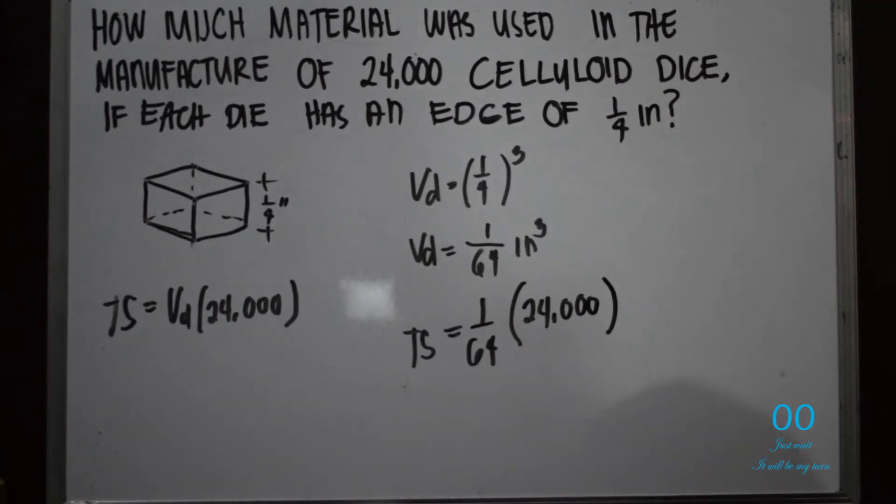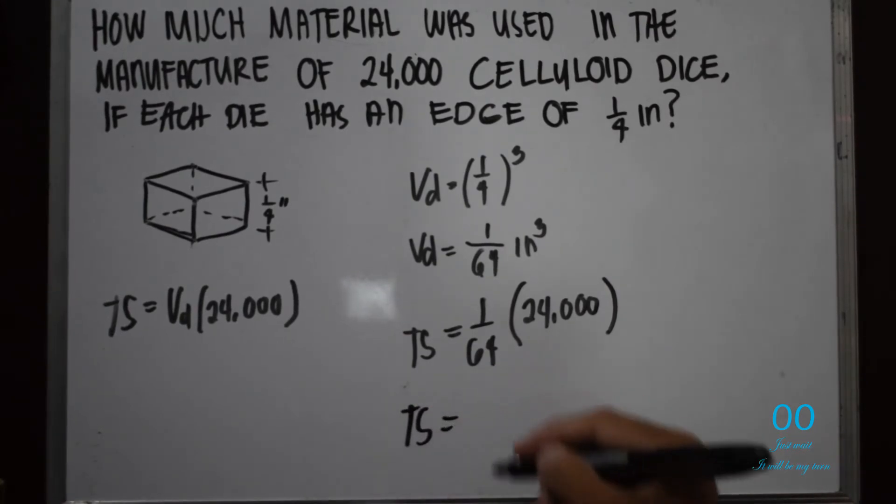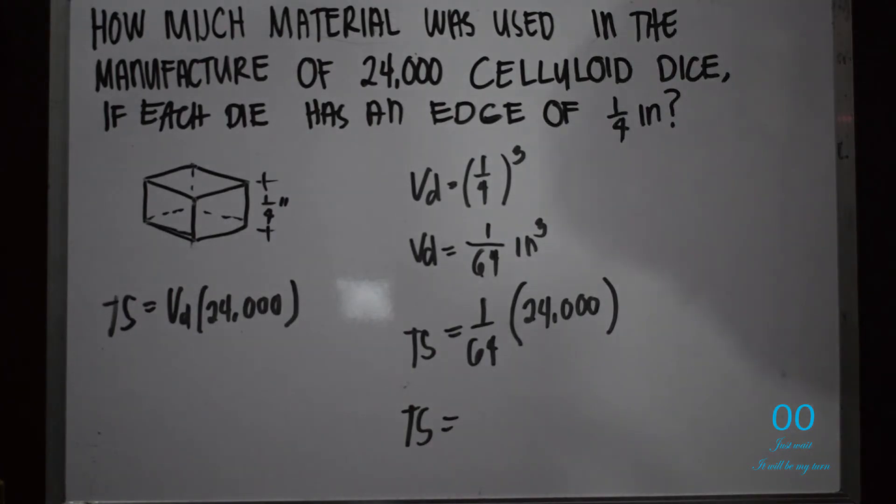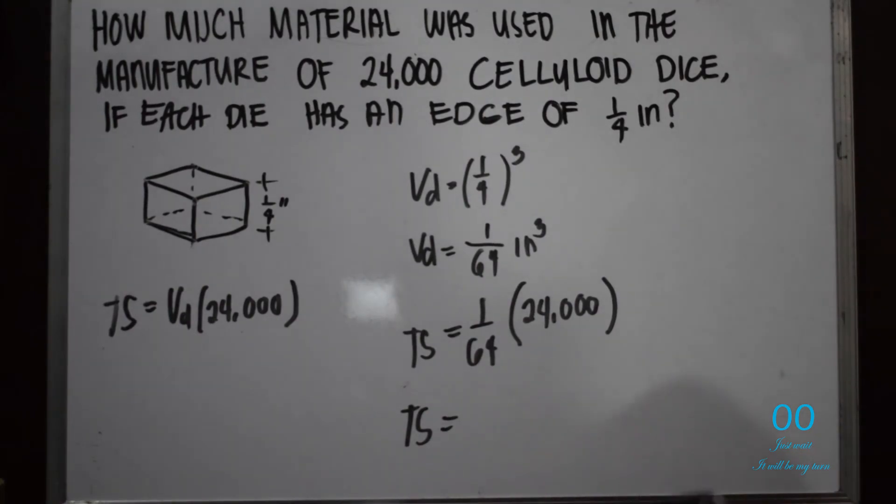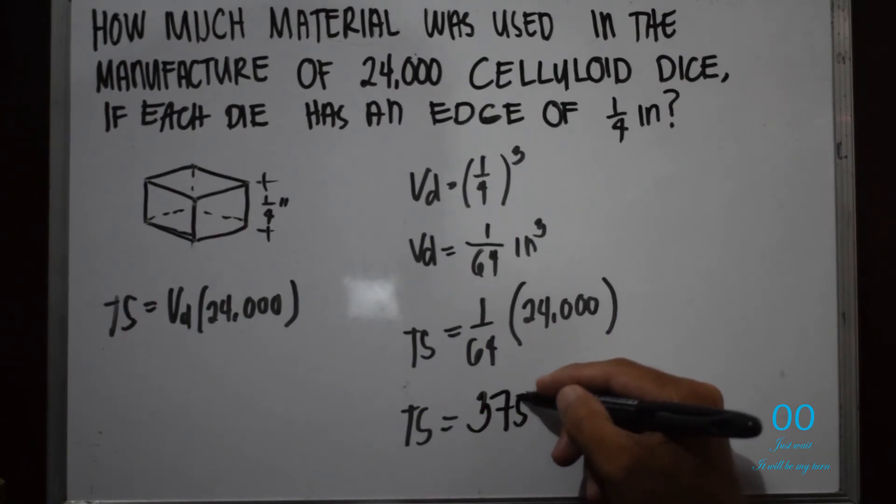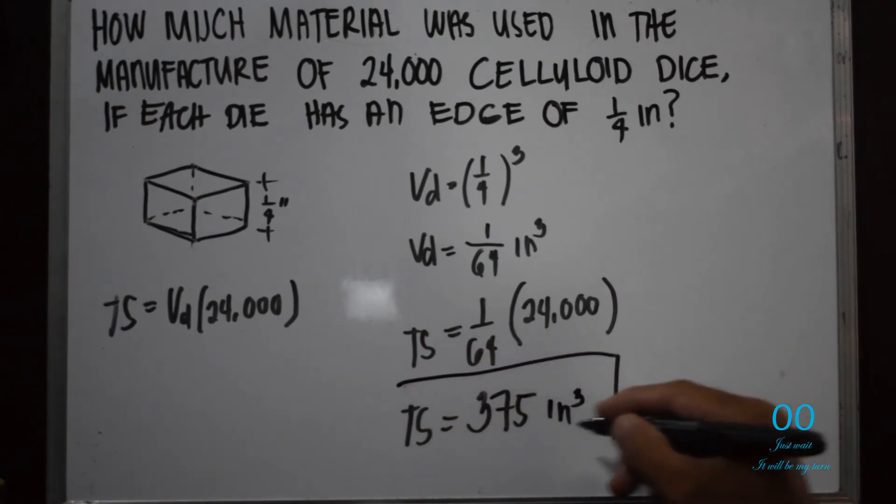Let me just get the calculator. So we have here 24,000 divided by 64 is 375 cubic inches. So this is the answer.